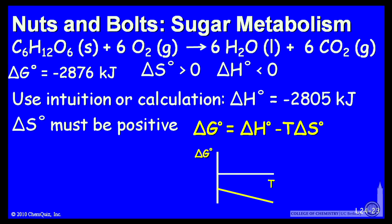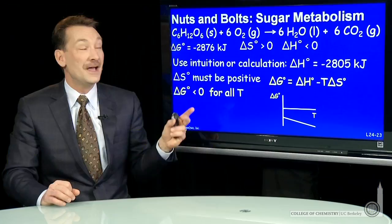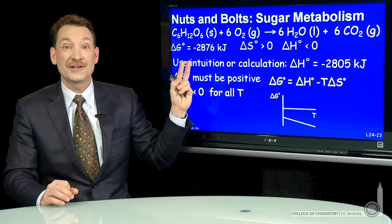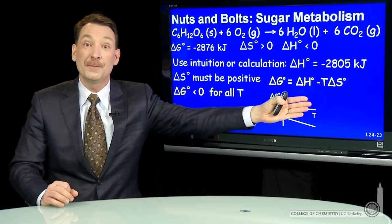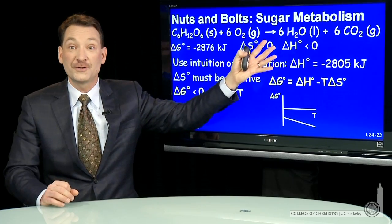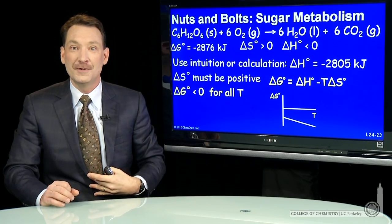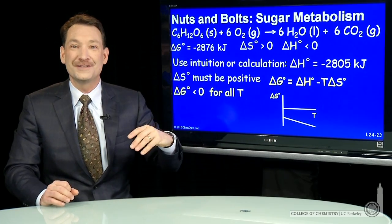The plot will look something like this: a negative intercept and a negative slope. So this reaction is spontaneous for all temperatures. Delta G is less than zero for all temperatures. So this chemical reaction is spontaneous over all temperatures and a good choice for use in metabolism of life because it's always spontaneous.